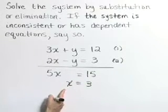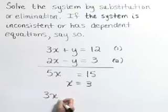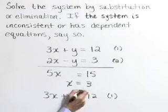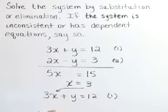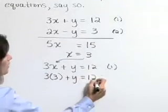Now let's solve for y, and I'm going to use equation 1 to do that. It is 3x plus y equals 12. In this equation, let's substitute 3 for x. So 3 times 3 plus y is 12.